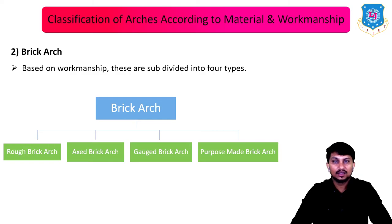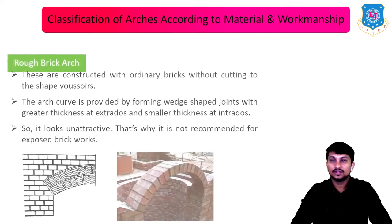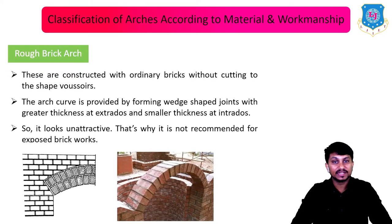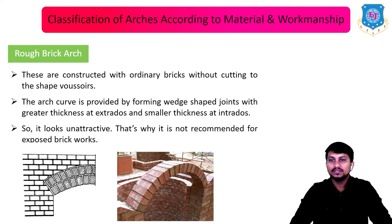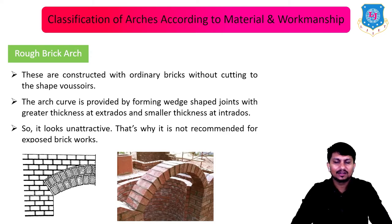The next type according to material and workmanship is brick arch, subdivided into four types: rough brick arch, axe brick arch, gauged brick arch, and purpose-made brick arch. In the rough brick arch, ordinary bricks are used without cutting the shape of voussoirs. The arch curve is provided by forming wedge-shaped joints with greater thickness at the extrados and smaller thickness at the intrados. It looks unattractive and is not recommended for exposed brick work.